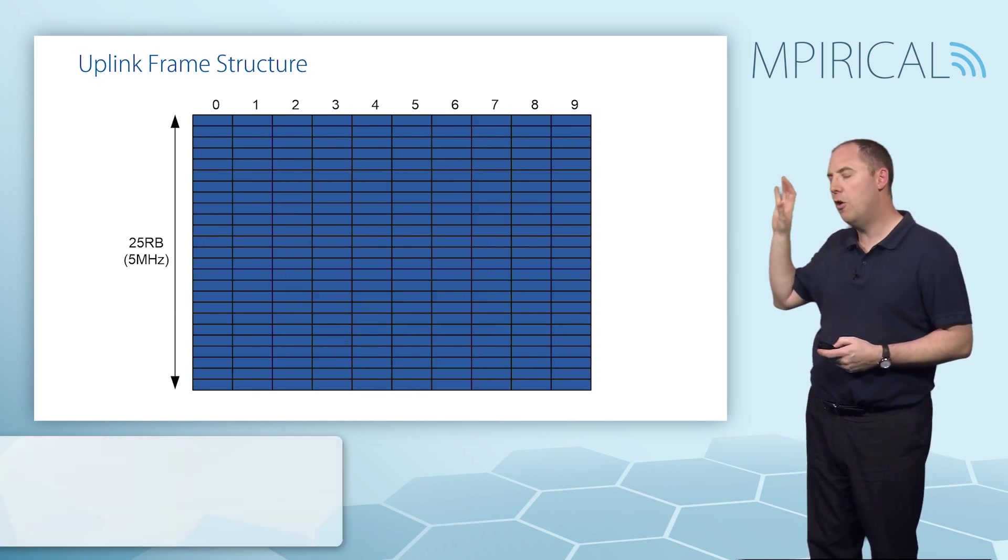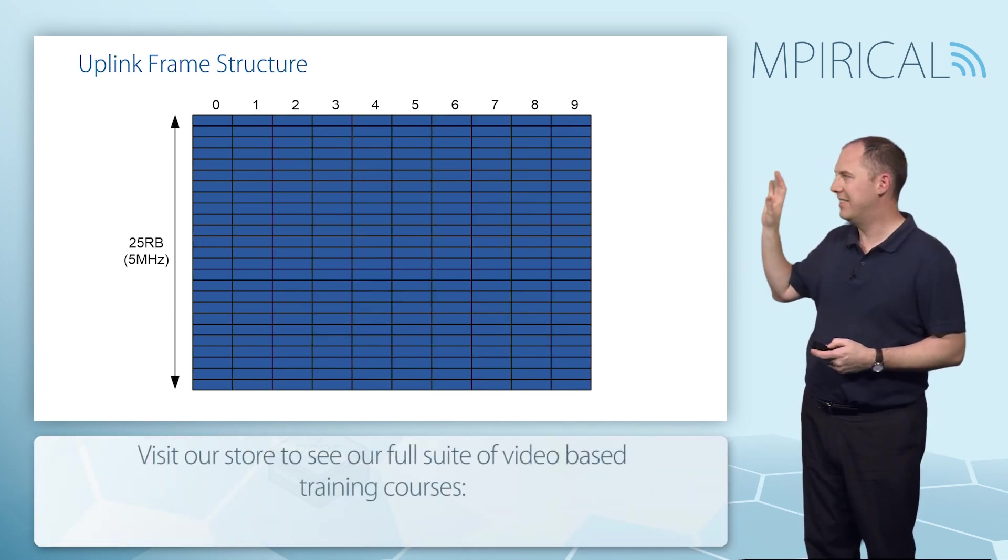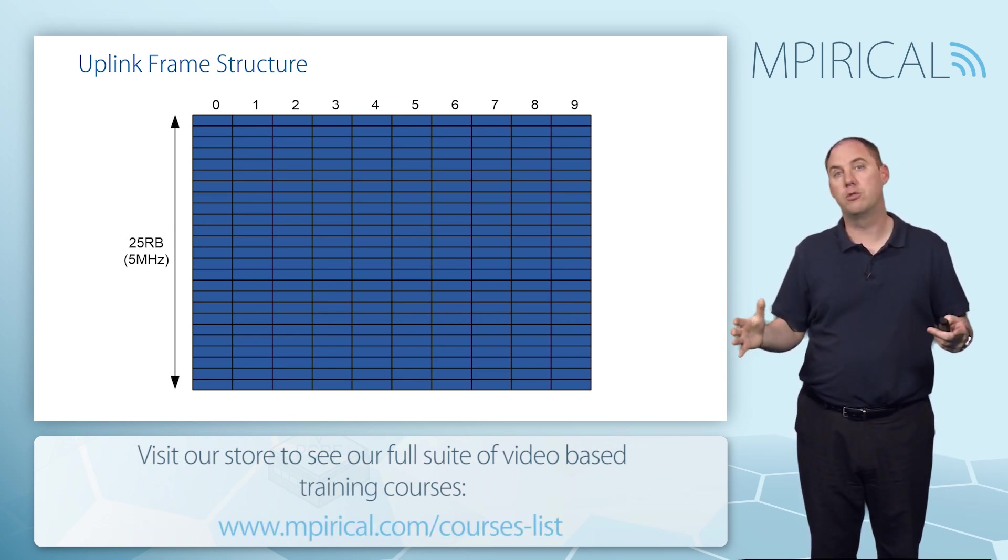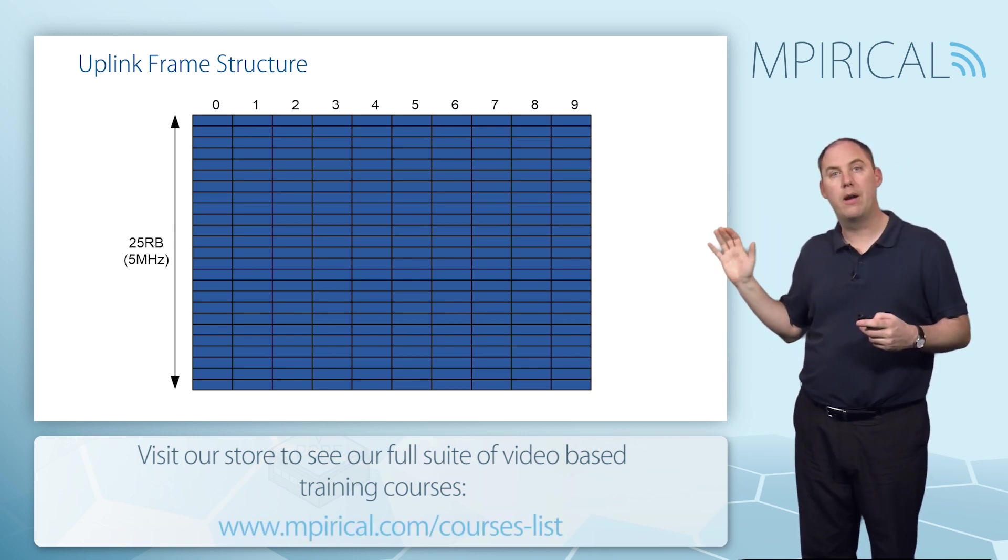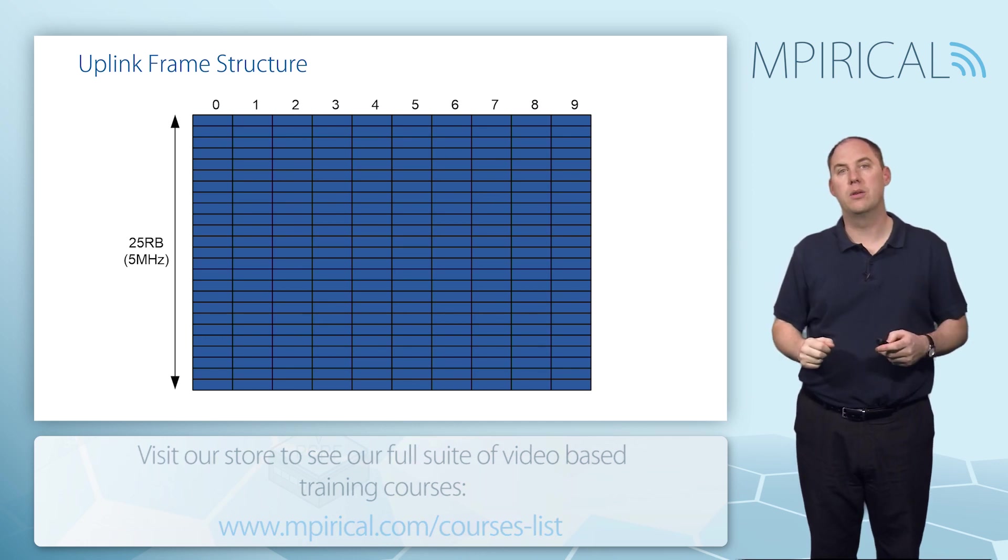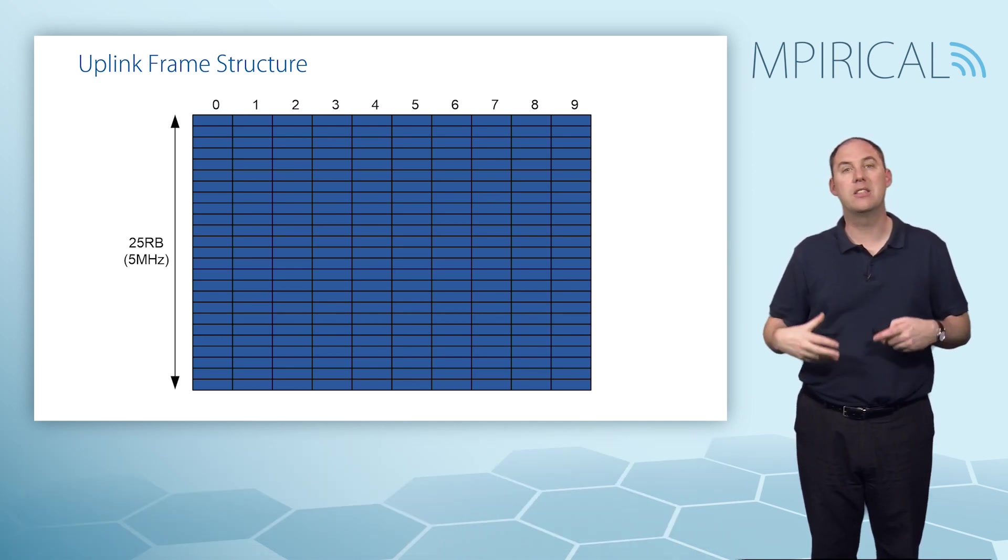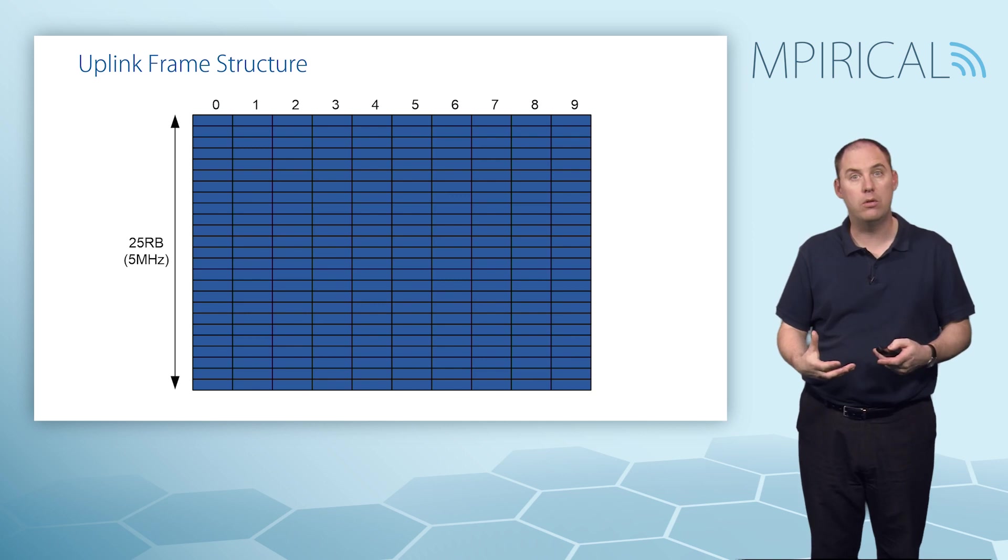As far as the uplink sub-frame is concerned, it looks very similar, in that you've got a similar 25 resource blocks and the same frame with 10 sub-frames. However, the allocation process, the scheduling, is based on the downlink control scheduling users in the uplink.